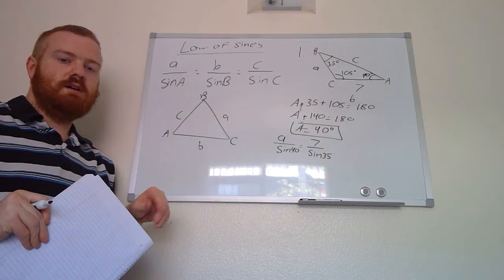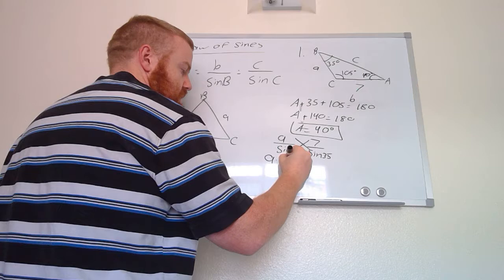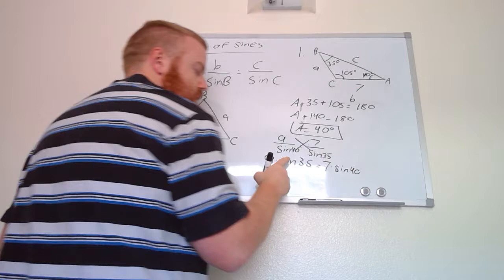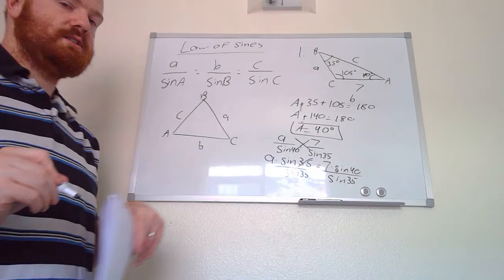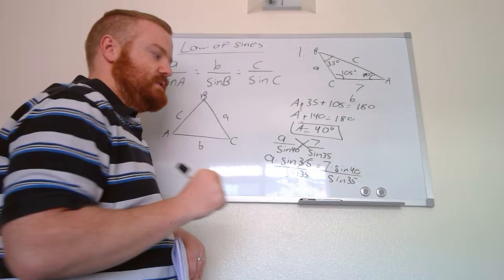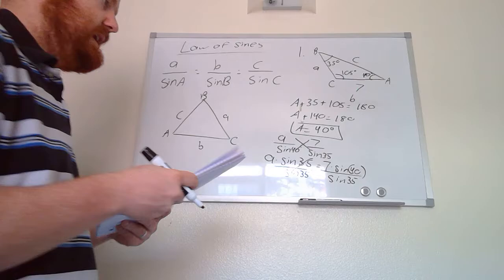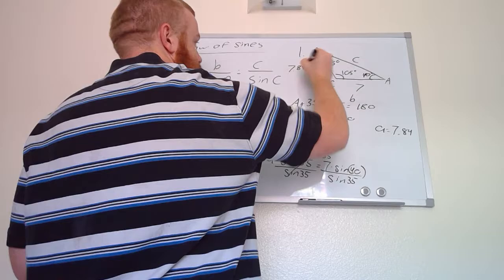We have one unknown value — side a — so we cross multiply: a times sine of 35 equals 7 times sine of 40. To get a by itself, we divide both sides by sine of 35. In your calculator, do 7 times sine of 40, close the parentheses, then divide by sine of 35. Plugging that in gives side length a equal to approximately 7.84.